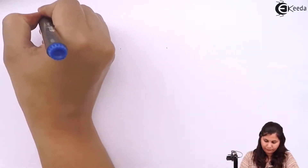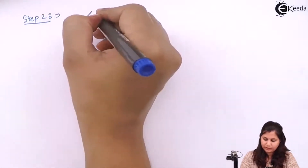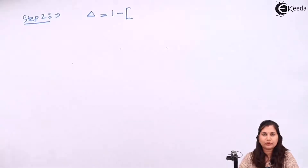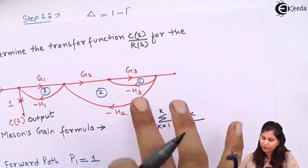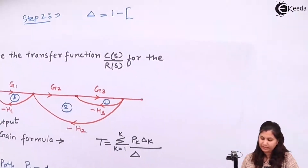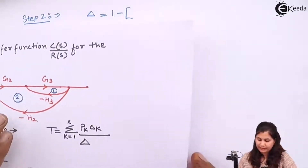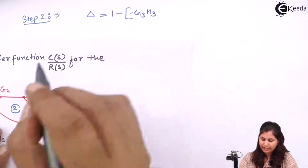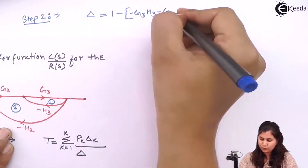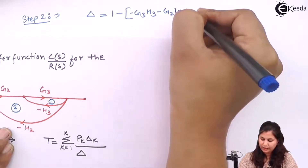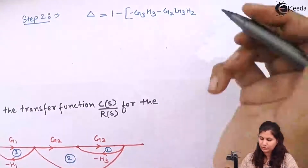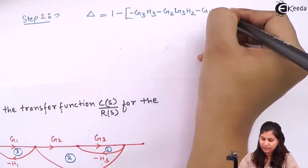Now step number 2 is to find out Δ. Δ is given by 1 minus the sum of all the individual loop gains. So we have 3 loops. The first loop is G3·(−H3), so it gives −G3H3. Then we have G2·G3·(−H2), so we have −G2G3H2. Then we have G1·(−H1), so we have −G1H1.